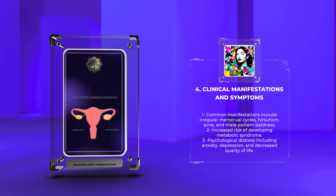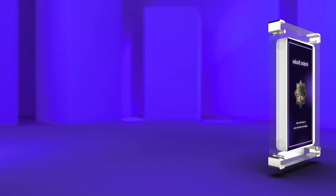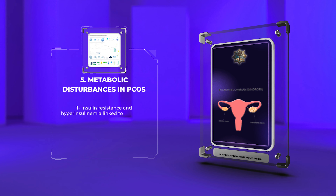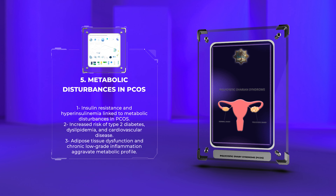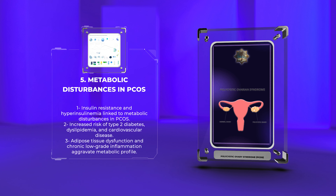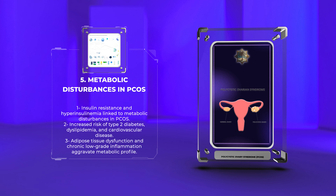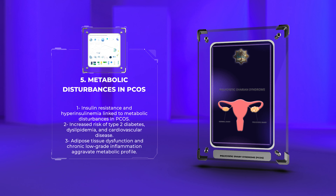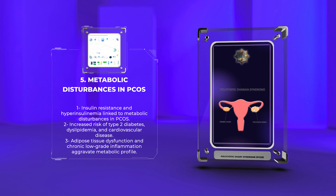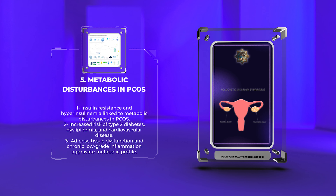Metabolic disturbances in PCOS: Metabolic disturbances in PCOS are intricately linked to insulin resistance and hyperinsulinemia. Insulin resistance not only increases the risk of type 2 diabetes but also contributes to dyslipidemia and cardiovascular disease. Additionally, adipose tissue dysfunction and chronic low-grade inflammation further aggravate the metabolic profile of individuals with PCOS.